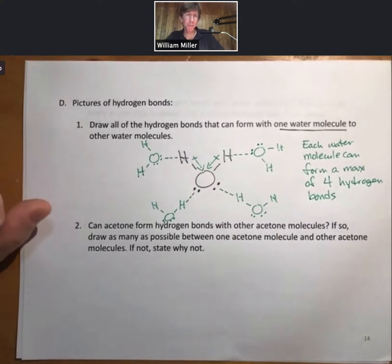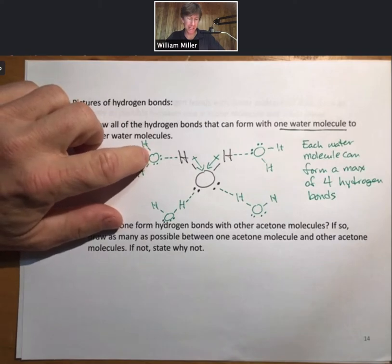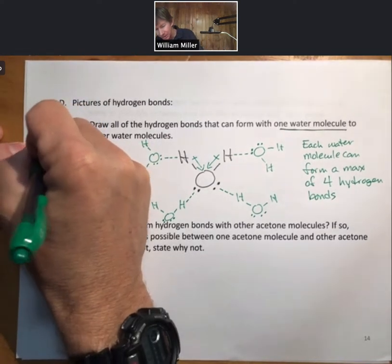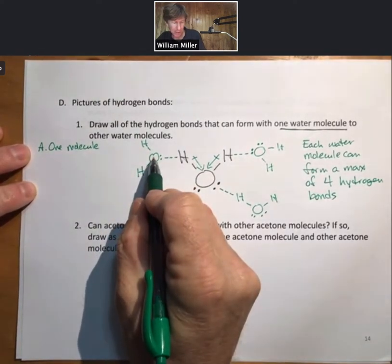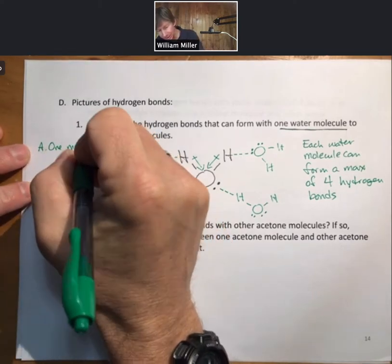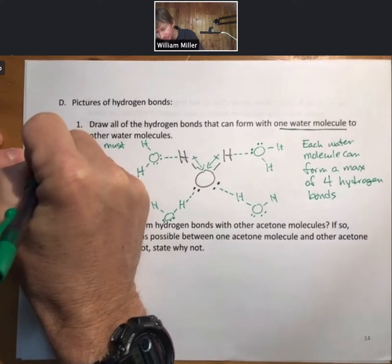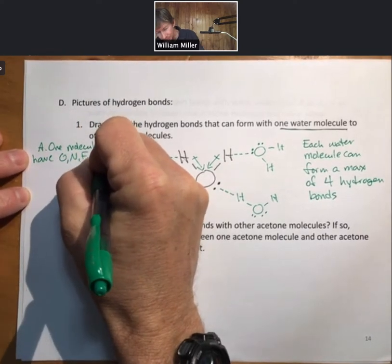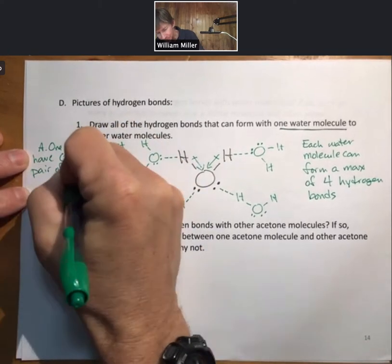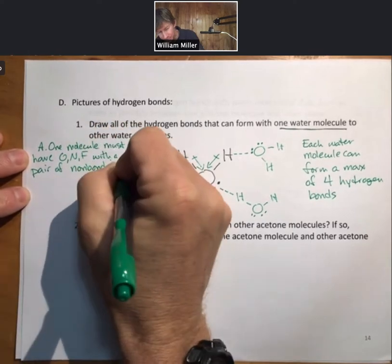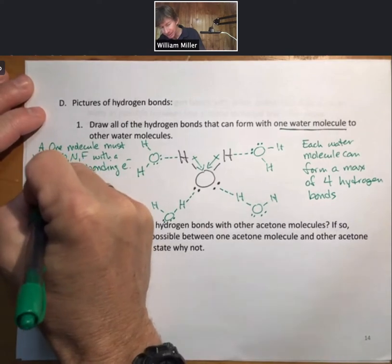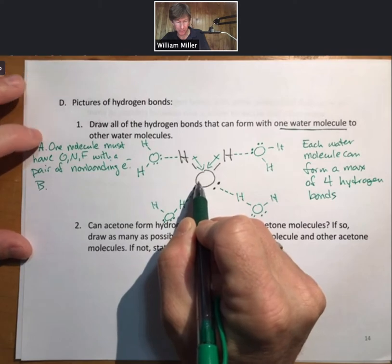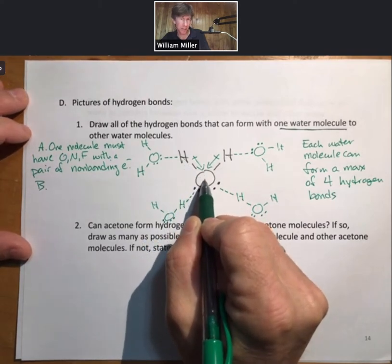To form a hydrogen bond, one of the molecules has to have oxygen, nitrogen, or fluorine with a pair of non-bonding electrons. So one molecule must have oxygen, nitrogen, or fluorine with a pair of non-bonding electrons, which they almost always do. So if you have an oxygen, it typically will have two pairs of non-bonding electrons. But the other thing you have to have is: the other molecule must have hydrogen covalently bonded to oxygen, nitrogen, or fluorine.